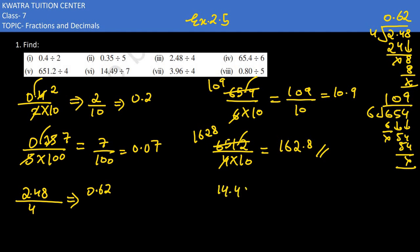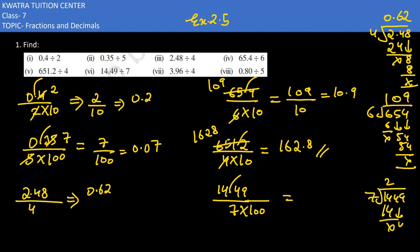Next we have 14.49 divided by 7. Remove the decimal, 7 comes down and two zeros come, so 100 in denominator. 14 divided by 7 is 2, then bring down 49 — place one 0, and 7 times 7 is 49. So the value we get is 207. Then 207 divided by 100 gives 2.07 as the answer.